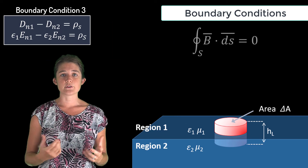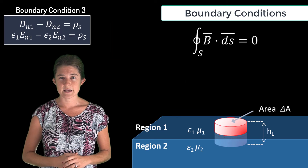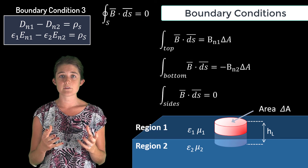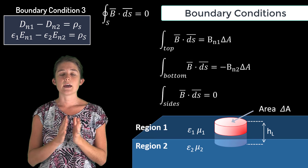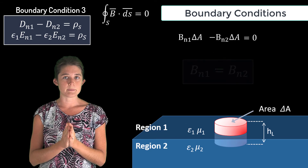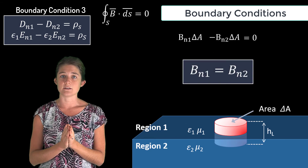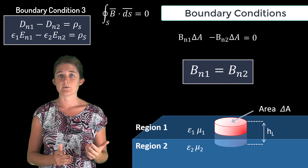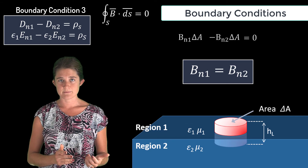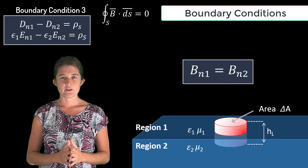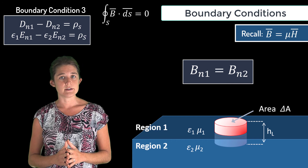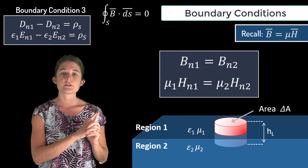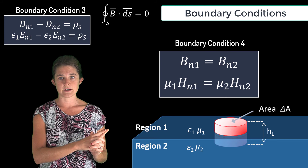Finally, let's apply the solenoidal law to that same box. Performing the surface integral over all surfaces of the box, we obtain that the normal part of the magnetic flux density in region one equals the normal part in region two. Since B equals mu H, this may be rewritten in terms of H. This is the fourth boundary condition.